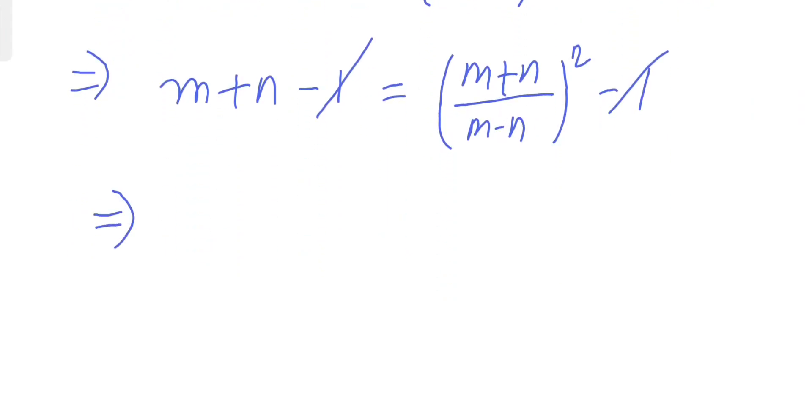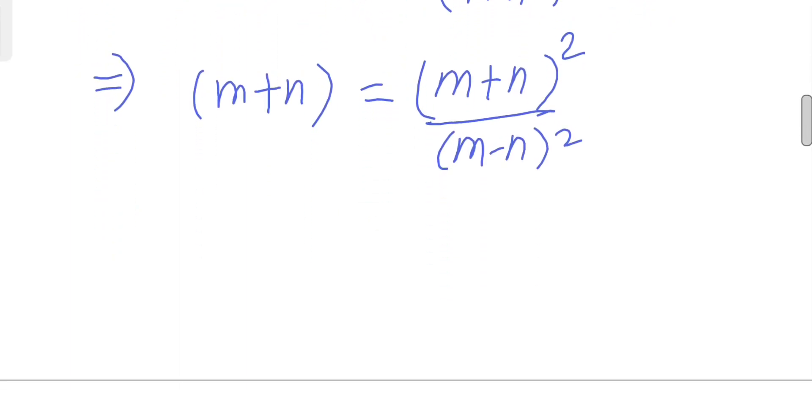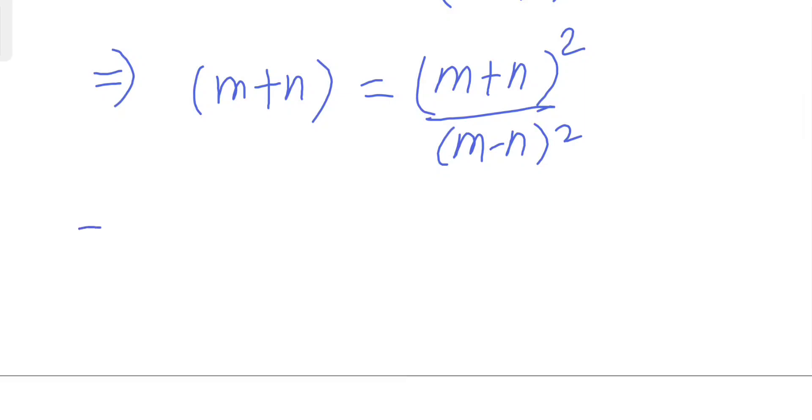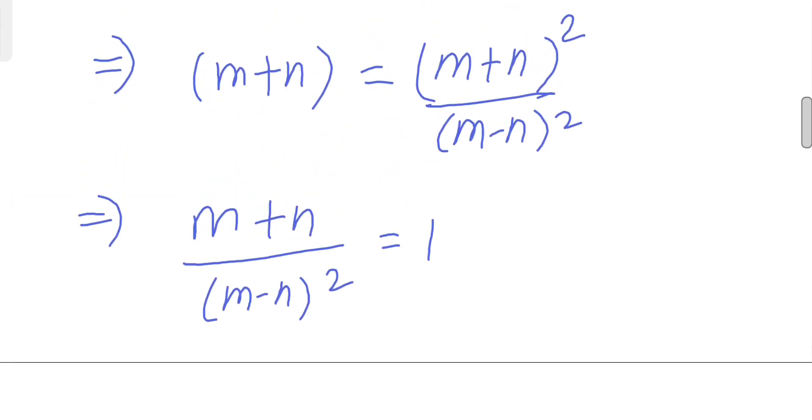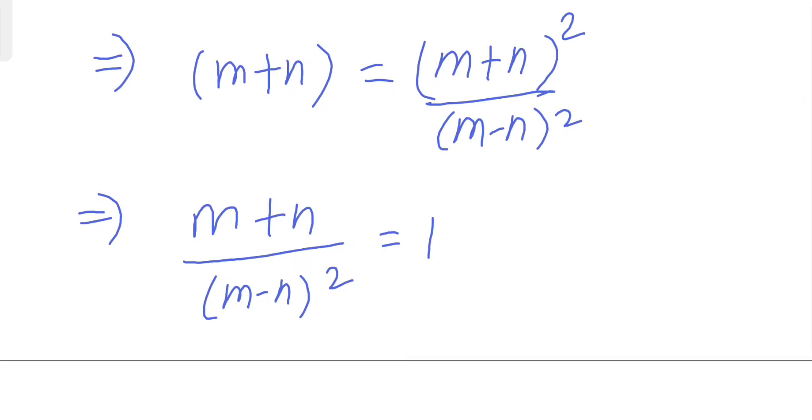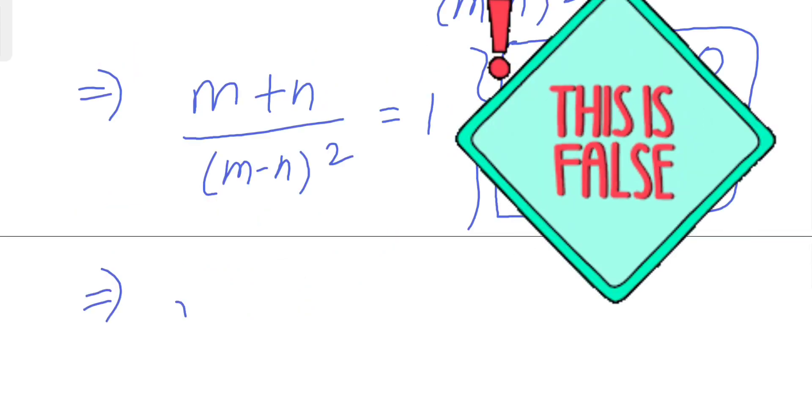This gives us (m-n)² canceling m, dividing both sides by (m+n)². So now dividing by m+n, this gives us (m-n)² equals m+n.